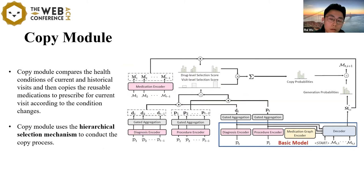The above is the basic model. In basic model section, we predict medications based on the patient's current health conditions, but it doesn't consider the information of a patient's historical visits. In this section, we designed a copy model to extend the basic model, which first compares the health conditions of current and historical visits, and then copies the reusable medications to prescribe for current visits according to the condition change. Since the patient may have multiple visits, we use the hierarchical selection mechanism to conduct the copy process at each decoding step.